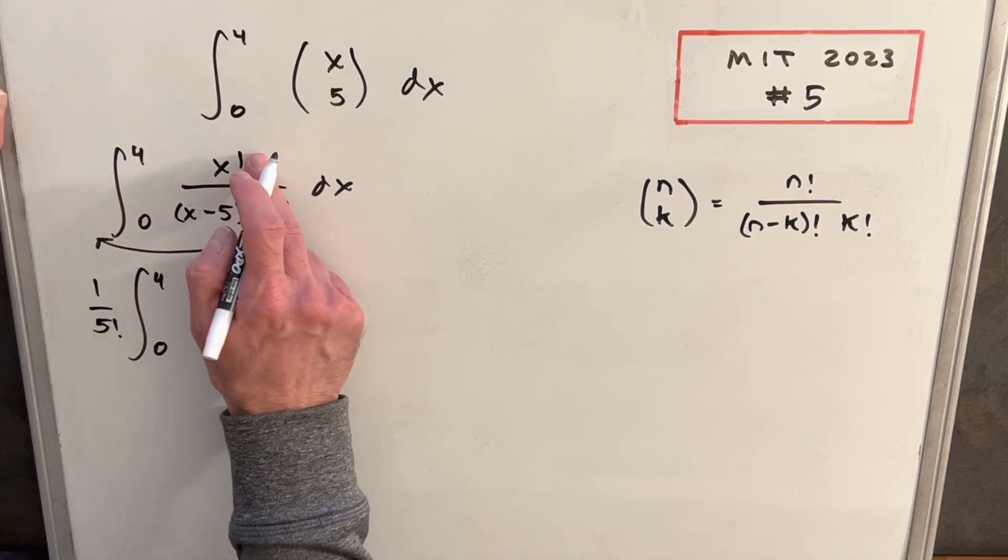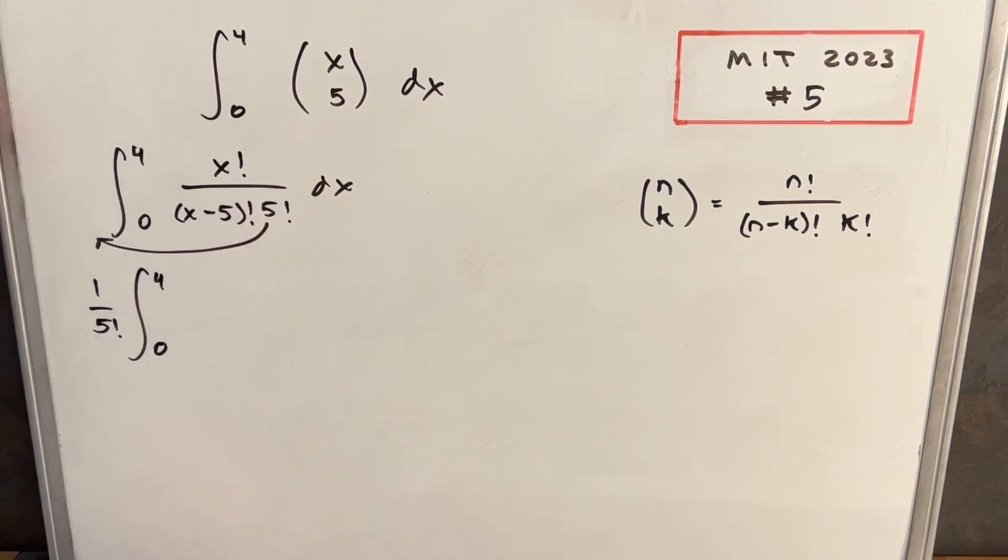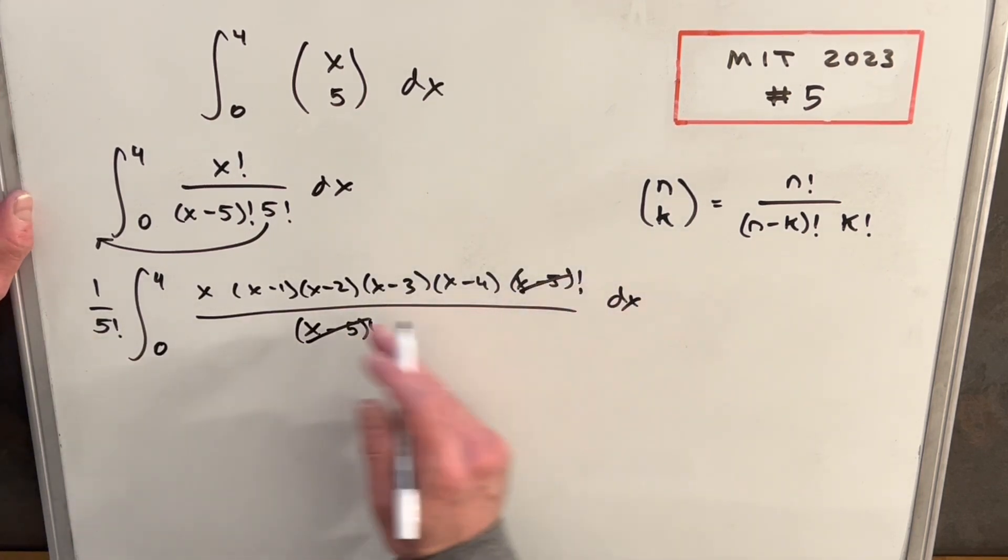And then we can write this, I'll just expand this x factorial and write out all the terms. So let's just do that real quick. And the reason I do that, that's gonna allow me to just have this nice cancellation. So now we just have this big polynomial.